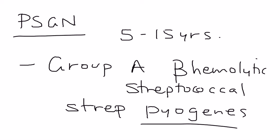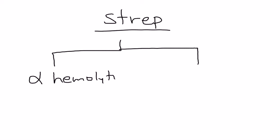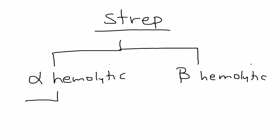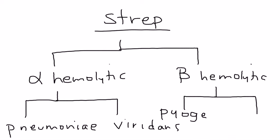There are a few categories of streptococcal pathogens: alpha-hemolytic and beta-hemolytic. Alpha-hemolytic strep has two types — Strep pneumoniae and Strep viridans. Beta-hemolytic strep also has two kinds: Strep pyogenes, known as group A, and Strep agalactiae, which is group B.